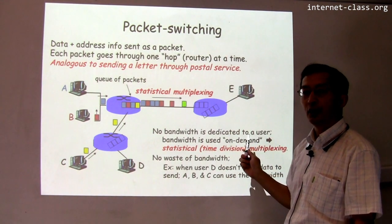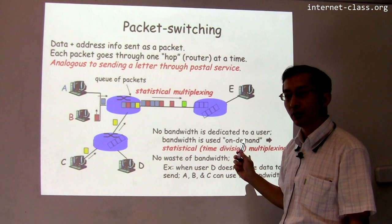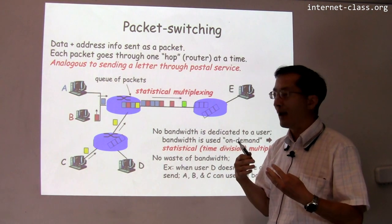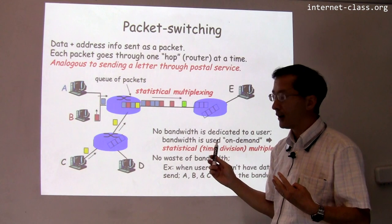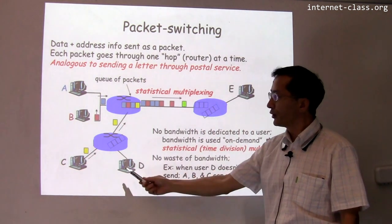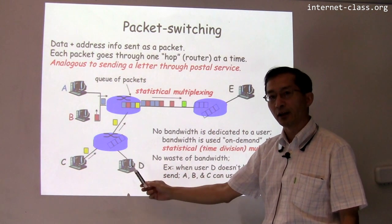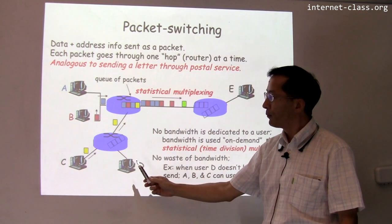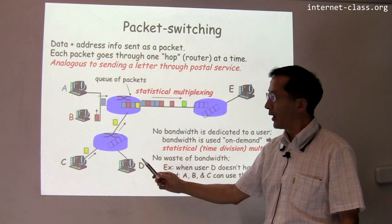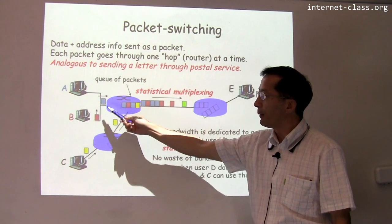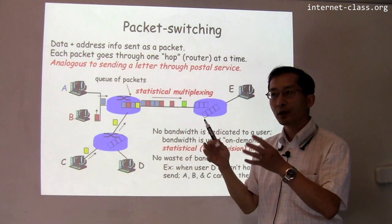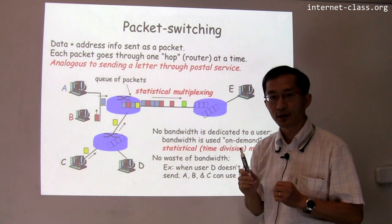The key difference is that in packet switching, no bandwidth is dedicated to any single user. Bandwidth is used only on demand — only when you have data to send. If user D doesn't have any data to send, no bandwidth is wasted. Other users A, B, and C can send their data using the available bandwidth.